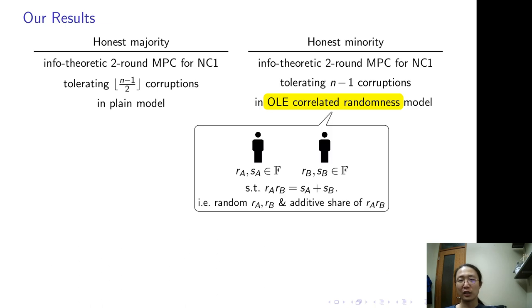This is a model where any pairs of parties jointly hold OLE correlation. They hold random field elements RA and RB respectively, and jointly hold the additive share of RA times RB. This is the arithmetic analog of OT correlation.